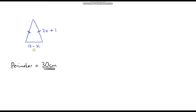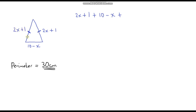Let's do one more. This time we've got a triangle, and we know that the perimeter of the triangle is 30 centimetres. Our job is to work out what this missing letter is. The first thing we're going to do is write an expression for the perimeter by adding up all of the side lengths. We've got 2x plus 1, plus 10 minus x. These dashes tell us this is an isosceles triangle, and with isosceles triangles these two lengths are exactly the same. So if this is 2x plus 1, this is also 2x plus 1. So we add on another 2x plus 1. This is the expression for our perimeter.